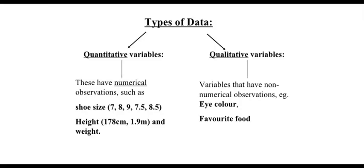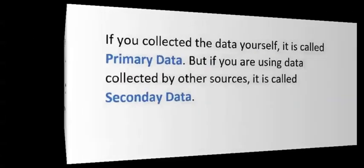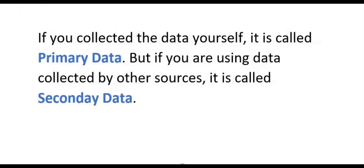Or qualitative, when it is non-numeric — for example, the color of your eyes or the type of food you eat. If you collected the data yourself, it is called primary data, but if you are using data collected by other sources, it is called secondary data.